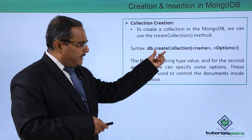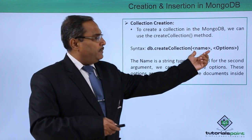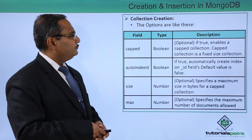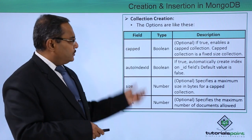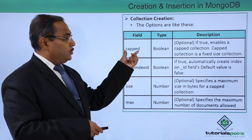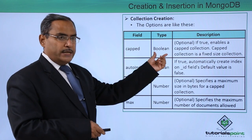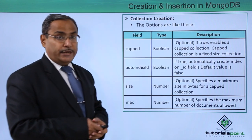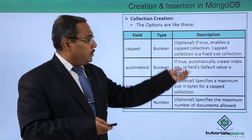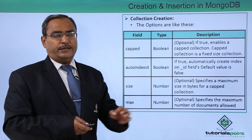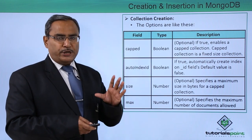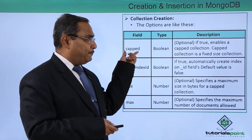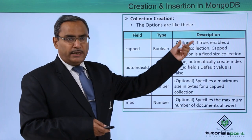db.createCollection() is the method — we pass the collection name and some options. The first option is capped, which is a Boolean and is optional. If set to true, it enables a capped collection, which is a fixed-size collection where we must specify the size.